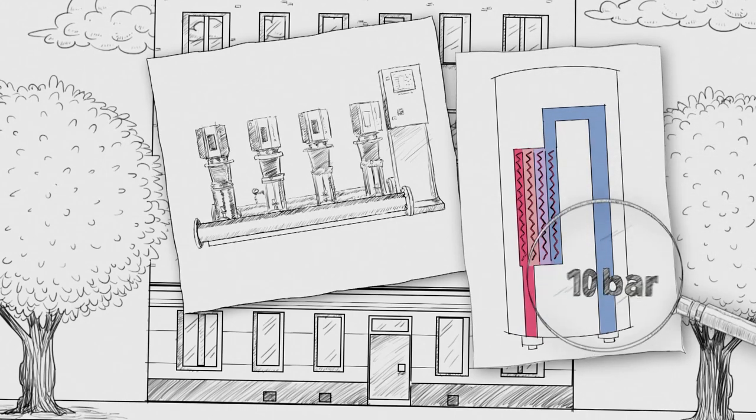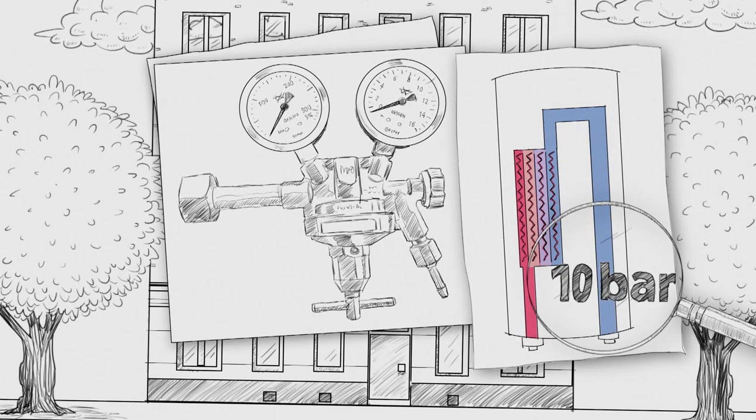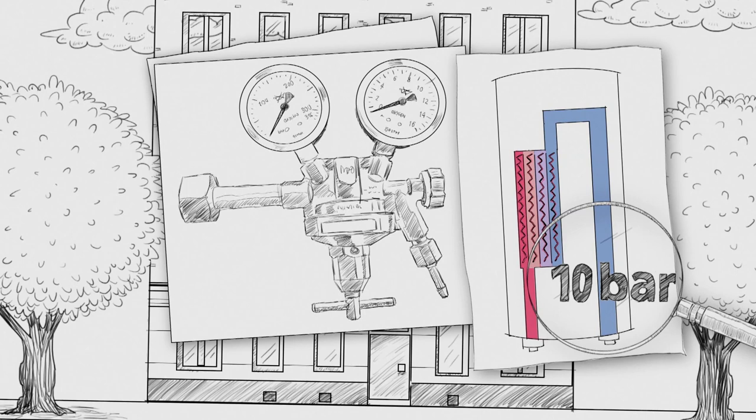Excessive mains water pressure, meaning 10 bar or higher, requires the installation of a pressure relief station to prevent damage to pipework and appliances.